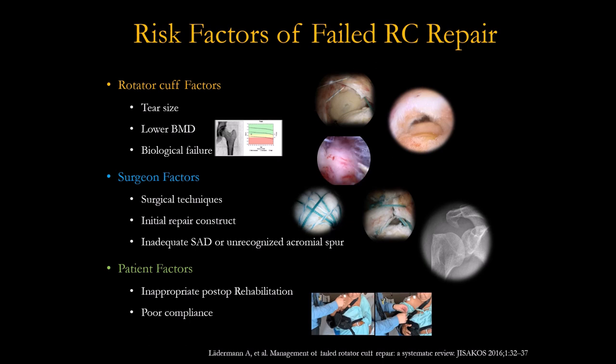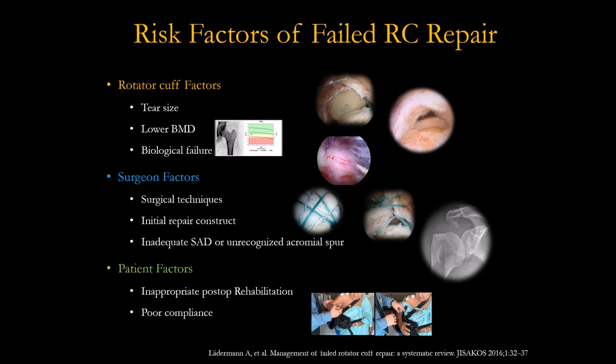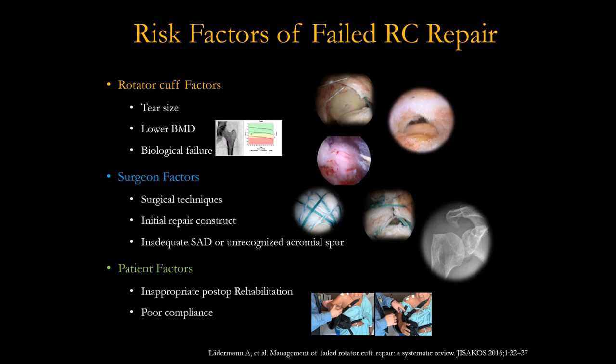There are several factors contributing to failed rotator cuff repair. Rotator cuff factors are most important — tear size, low bone mineral density, or biologic failure such as diabetes or smoking. For the surgeon, the key factors are surgical technique, the initial repair construct, inadequate decompression, or unrecognized acromion spurs.